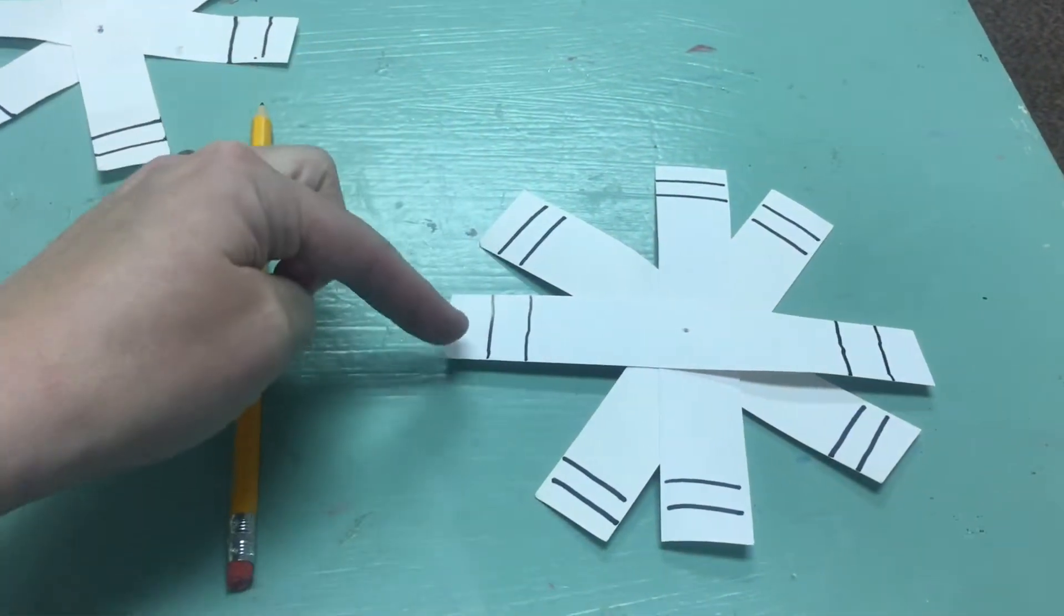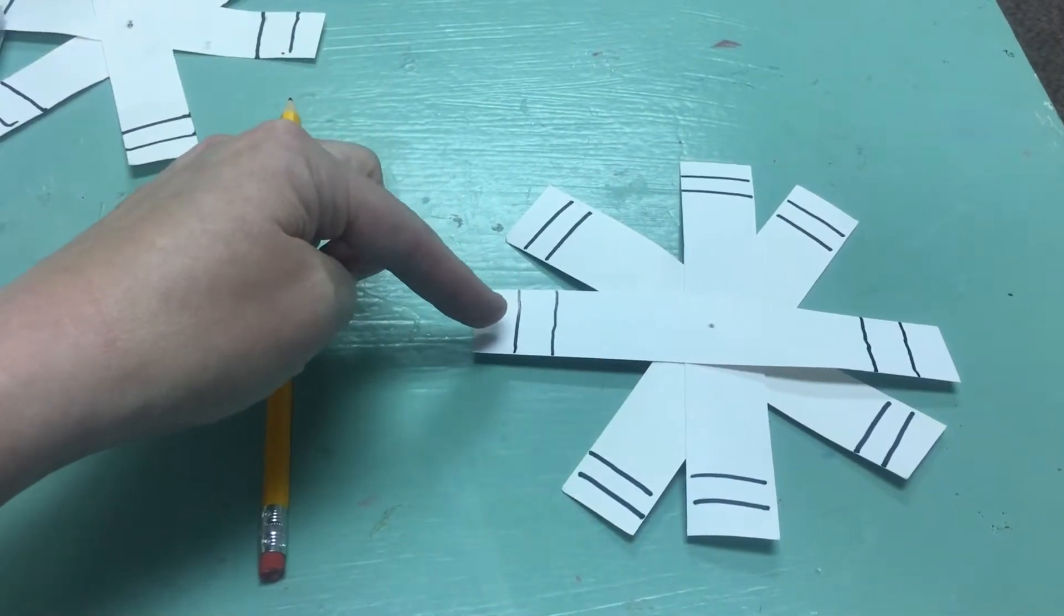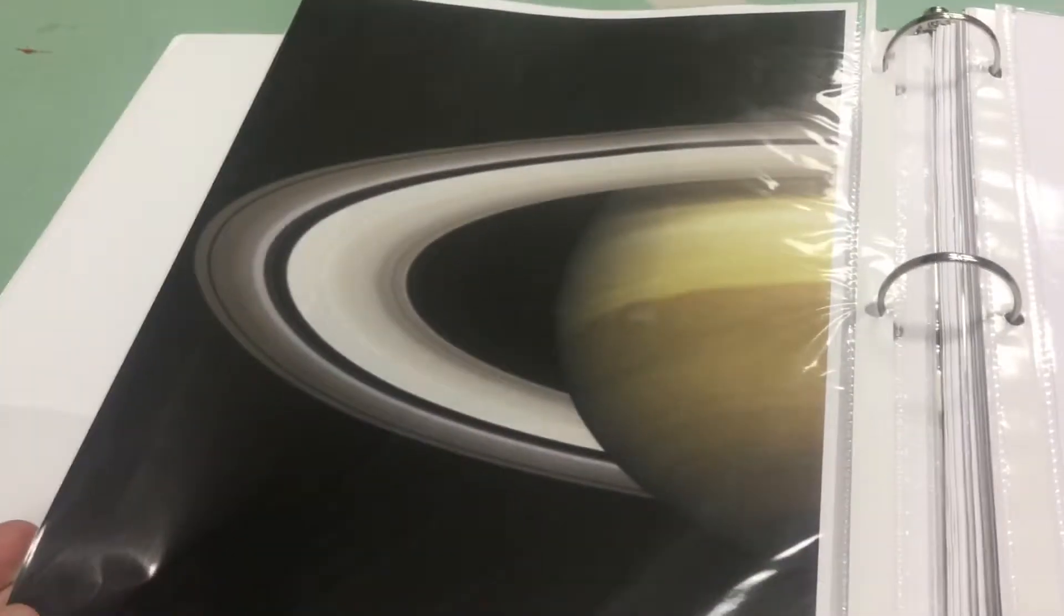And how as you're spinning it, as all of the different space matter is in orbit around Saturn, it gives us the appearance of solid rings.